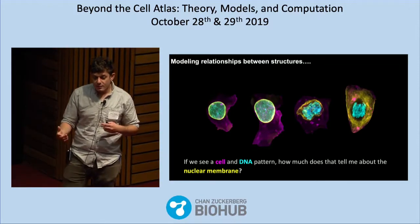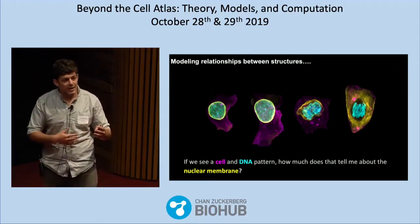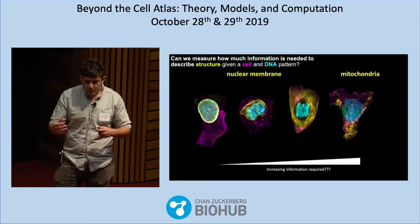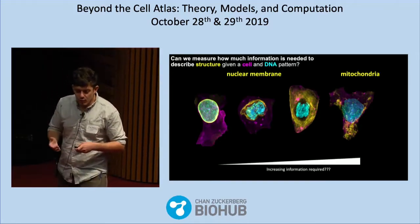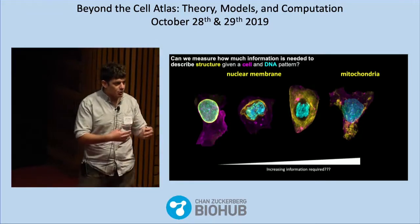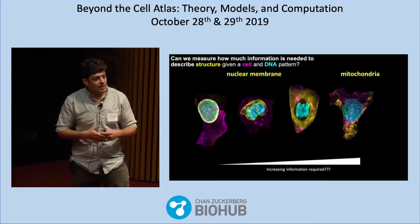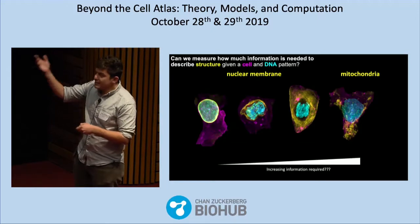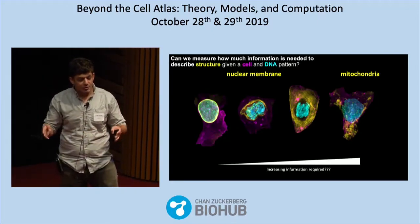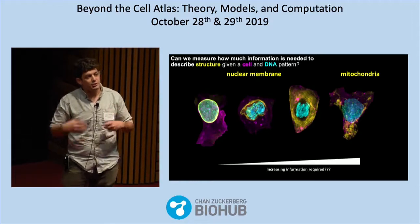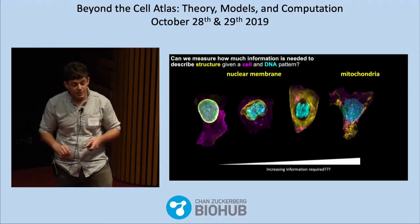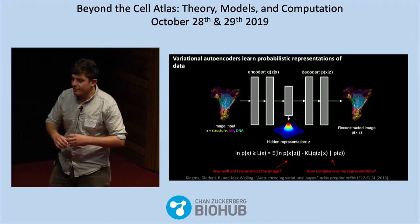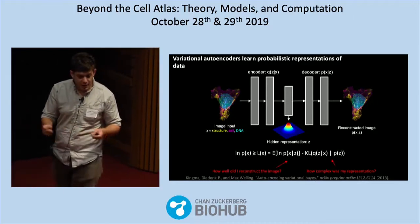To be a little more formal, we want to know: given some structures inside of the cell, how much information is required to describe another observation? I've sorted and started these yellow channels by how much information I would require to describe where that structure is, given the information in the cell and nuclear shape.